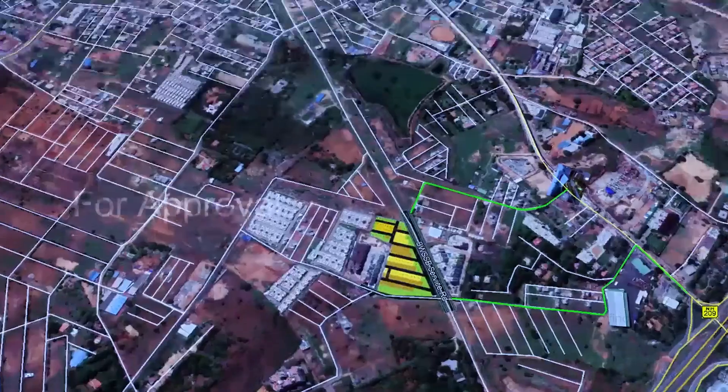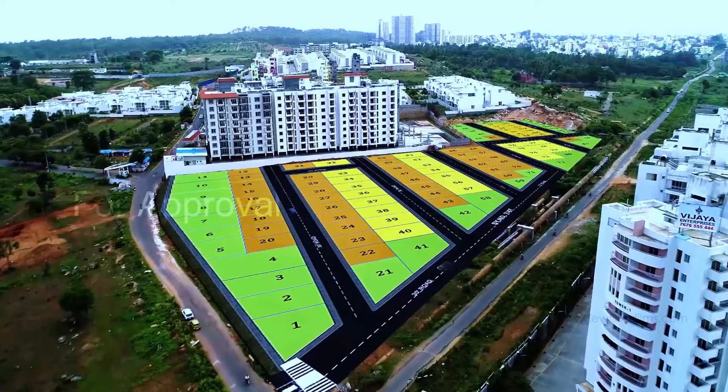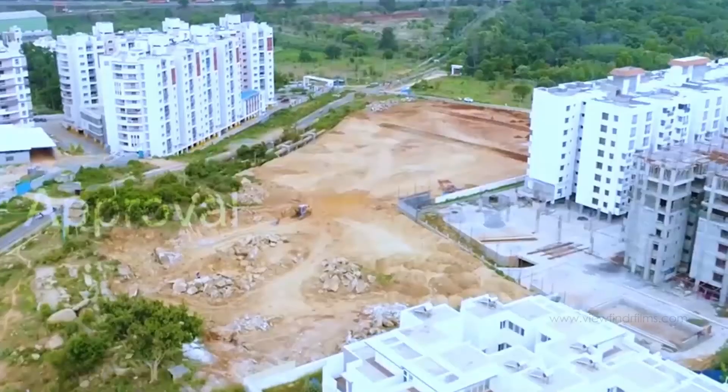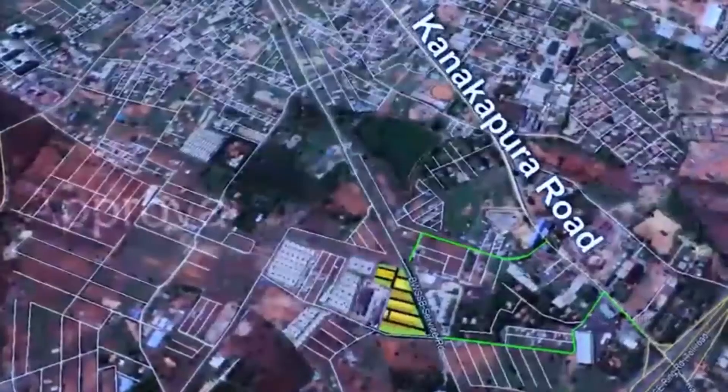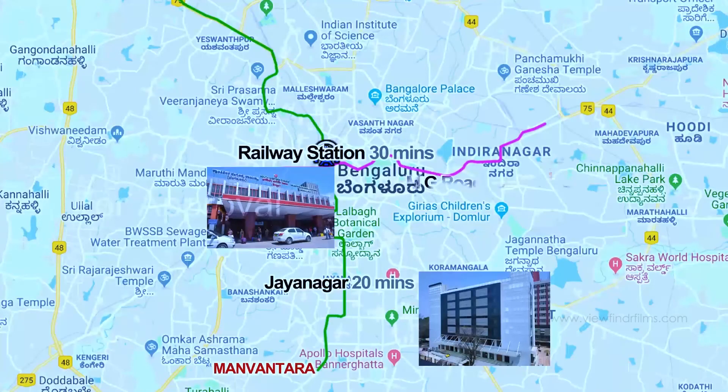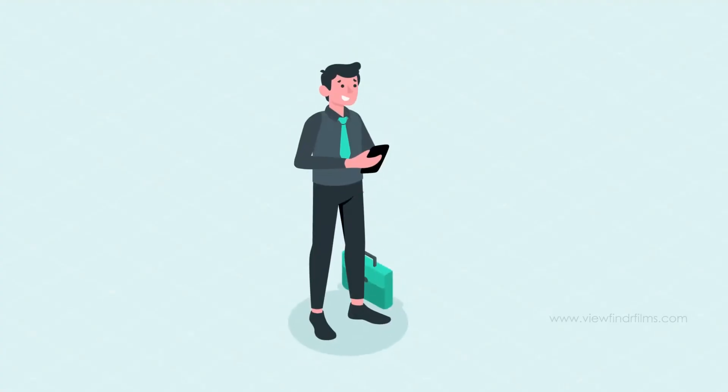If you are a seller, you can map your layout on GIMS Land Map, add videos, pictures, brochures, 360-degree views to your property, and generate leads. Along with this, you also get the plot booking management solution.